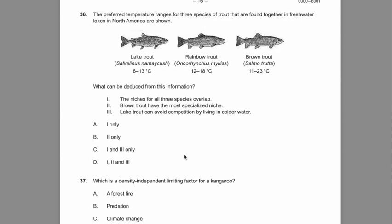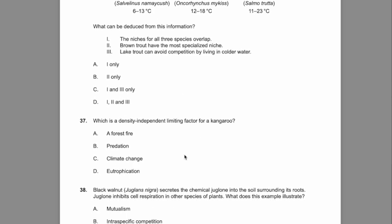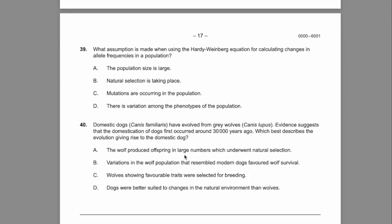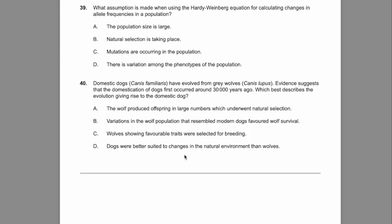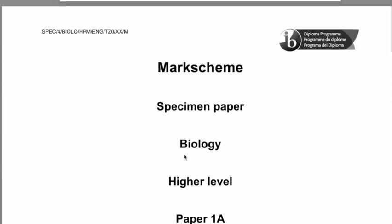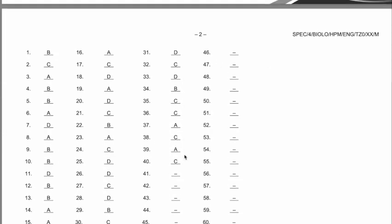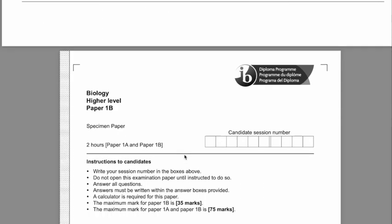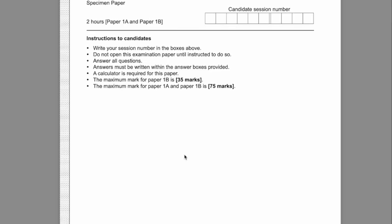And here, on different types of niche and on density-independent factors. So, ecology has been a bit expanded, and those questions on ecology actually came out of the old options section. But here are the answers for these 40 multiple choice questions. And then, in paper 1B.